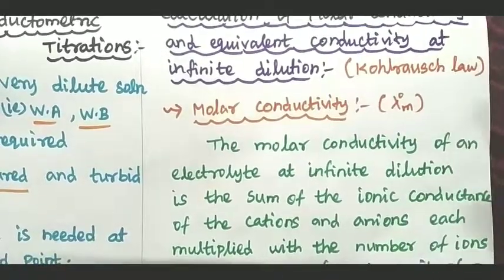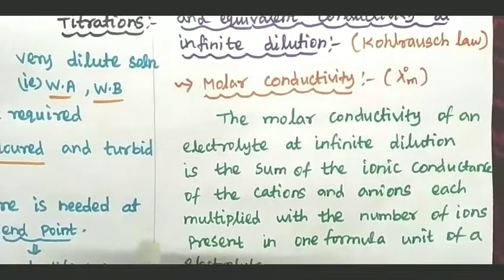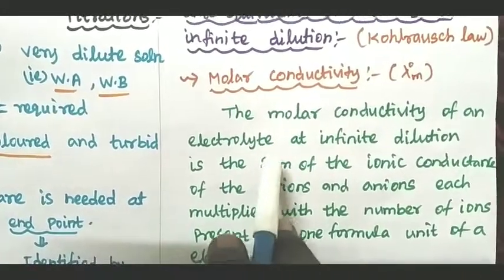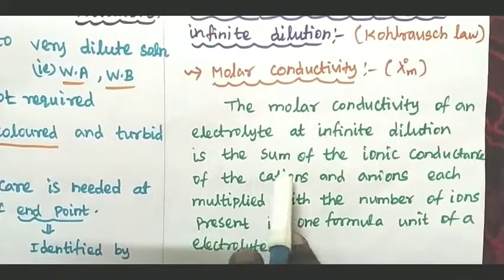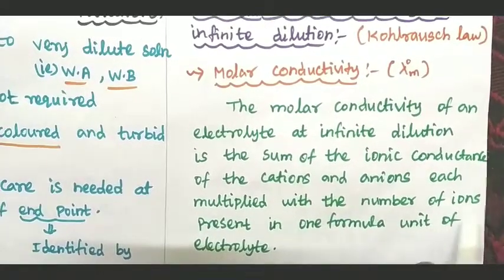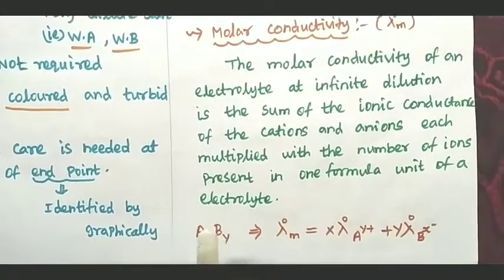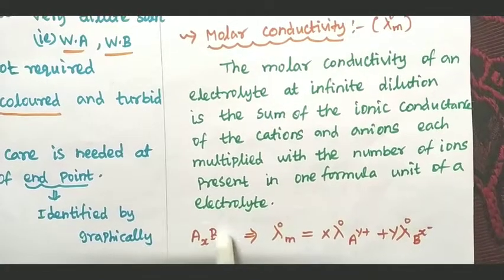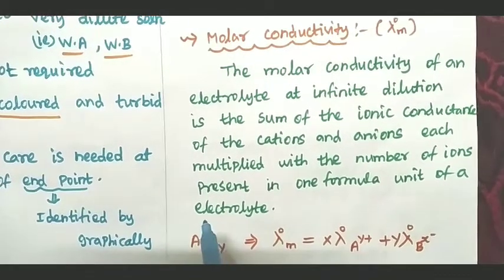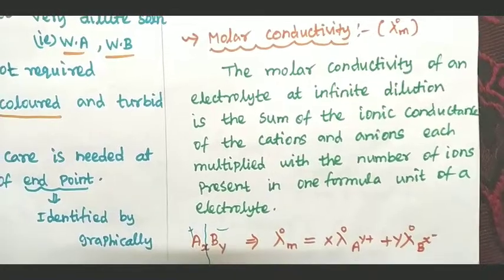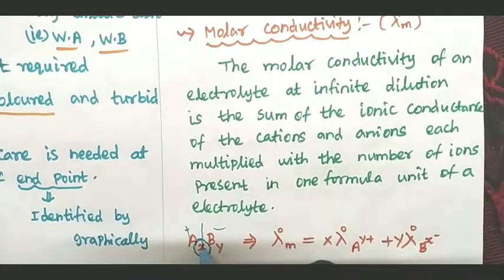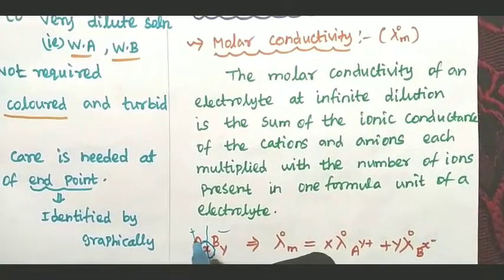The molar conductivity of an electrolyte at infinite dilution is the sum of the ionic conductances of the cation and the anions, each multiplied by the number of ions present in one formula unit of the electrolyte. For the general equation, first is the cation and second is the anion. That is the stoichiometry.